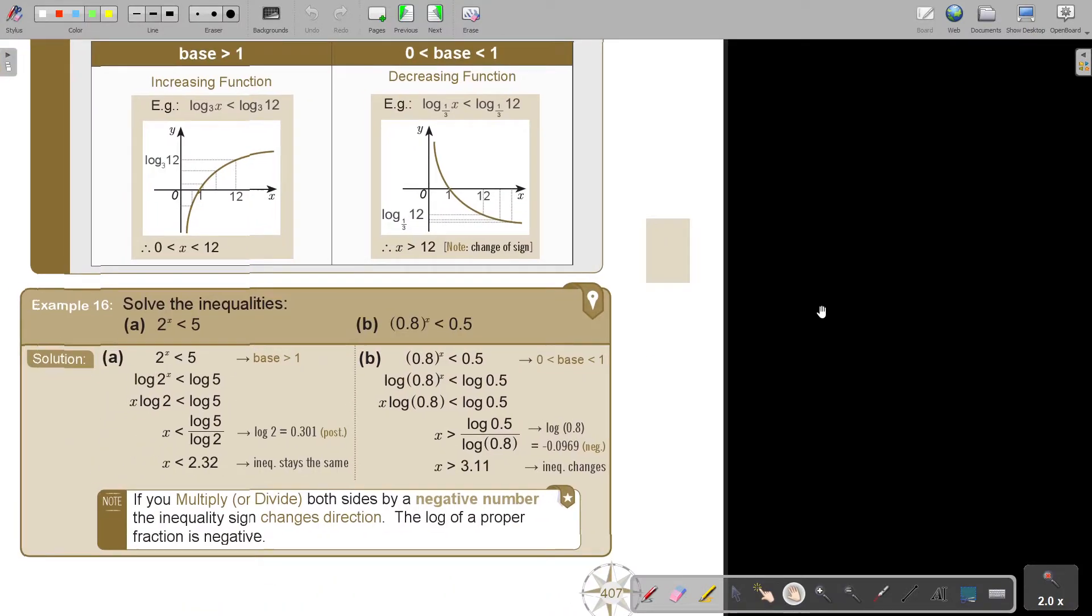Let's look at these two examples. Solve the inequalities. 2 to the power x is smaller than 5. Take the logs on both sides. Bring the x down. Divide by log 2. Now, log 2, you will see is positive, so the inequality stays the same.